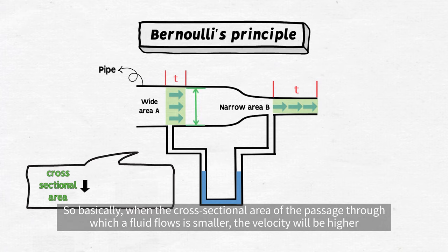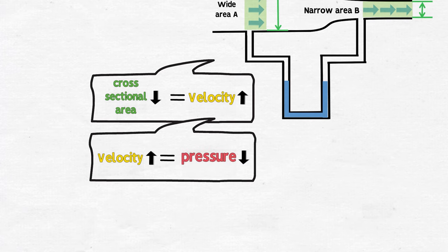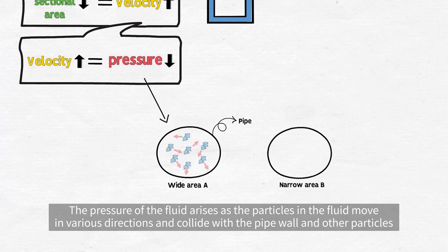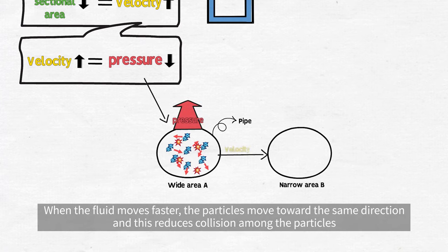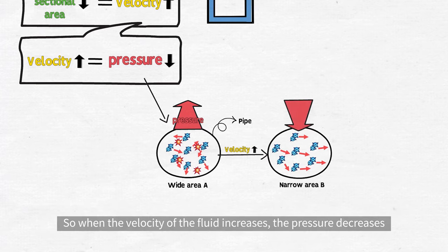So basically, when the cross-sectional area of the passage through which a fluid flows is smaller, the velocity will be higher. The change in velocity in turn affects the pressure of the fluid. The pressure of the fluid arises as the particles in the fluid move in various directions and collide with the pipe wall and other particles. When the fluid moves faster, the particles move toward the same direction and this reduces collision among the particles. So when the velocity of the fluid increases, the pressure decreases.